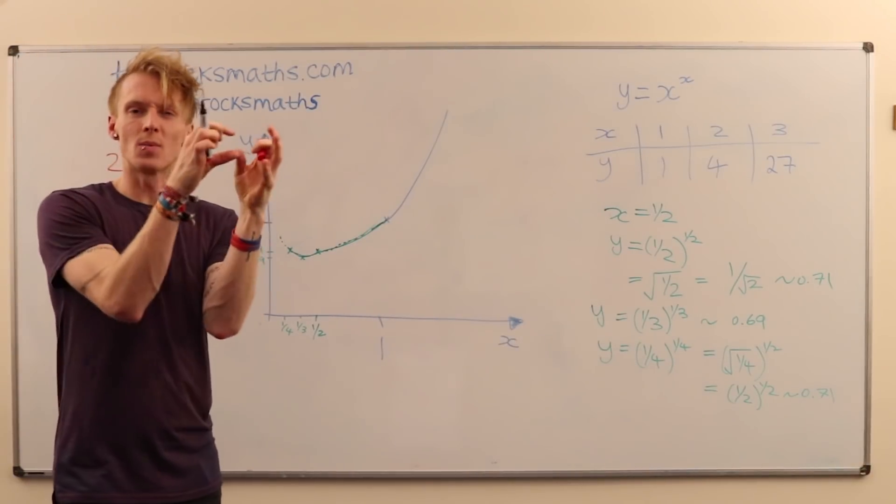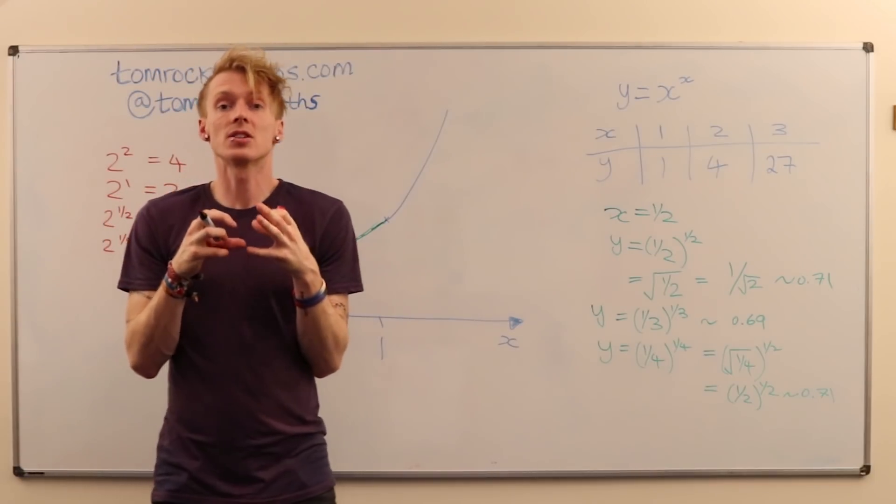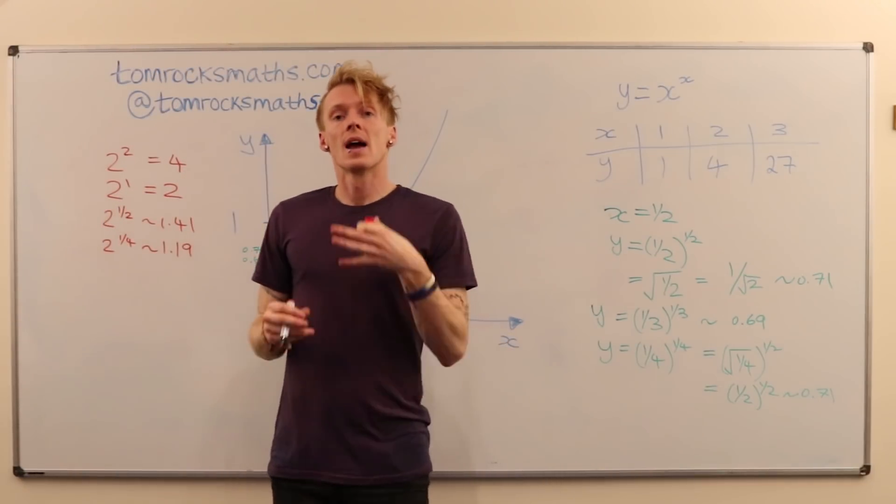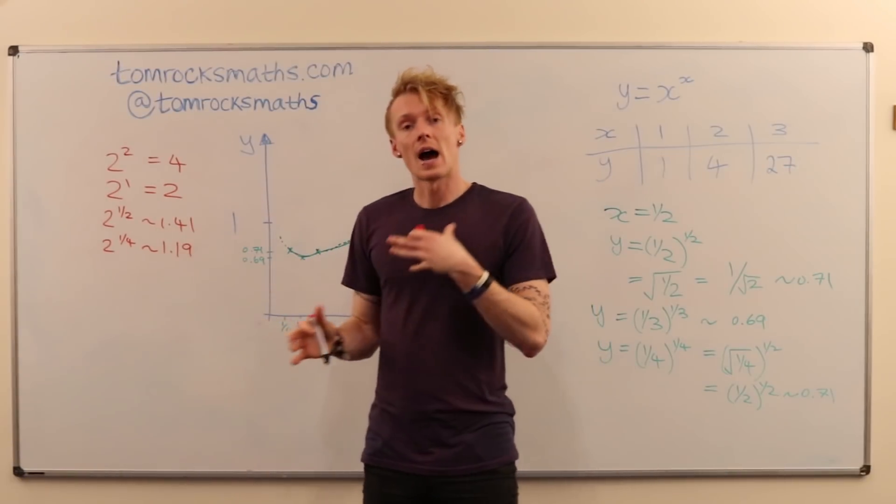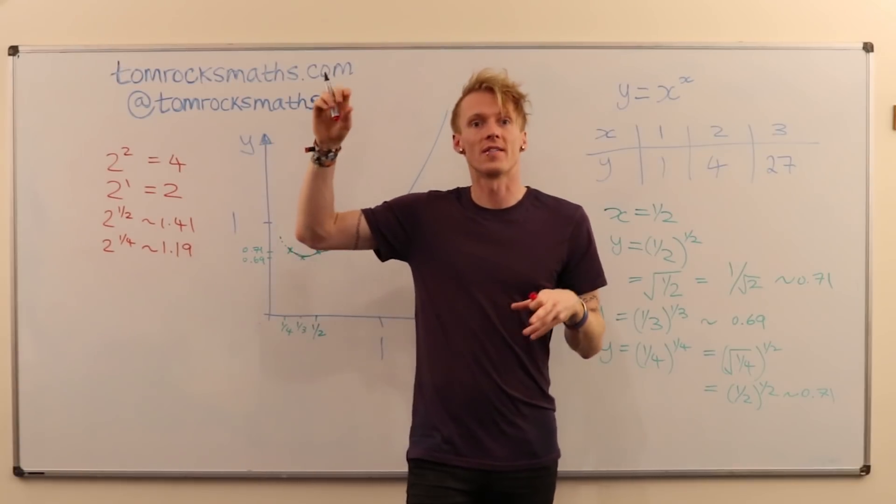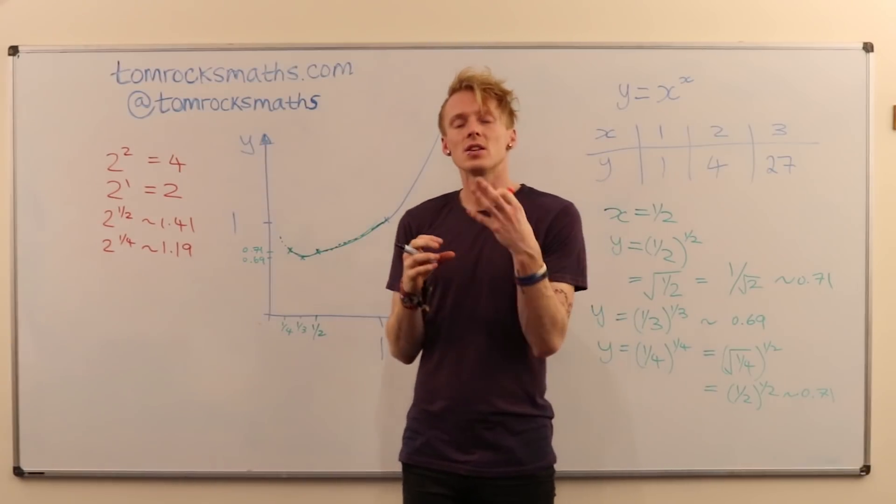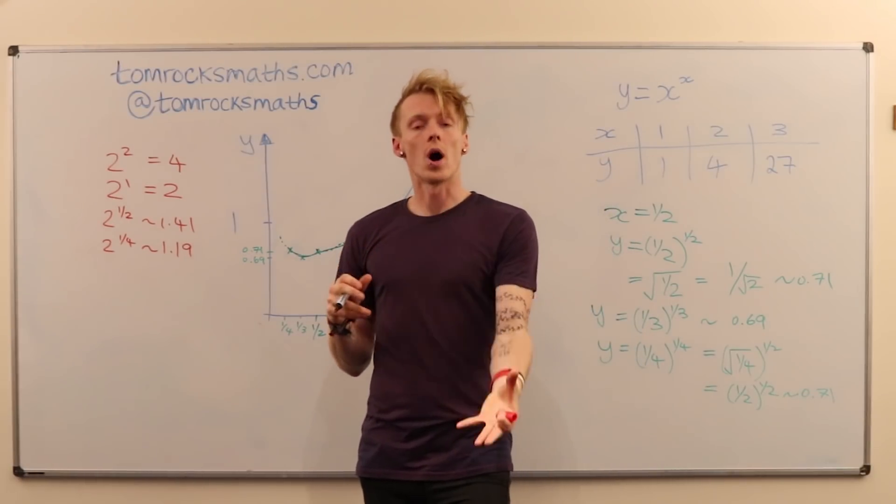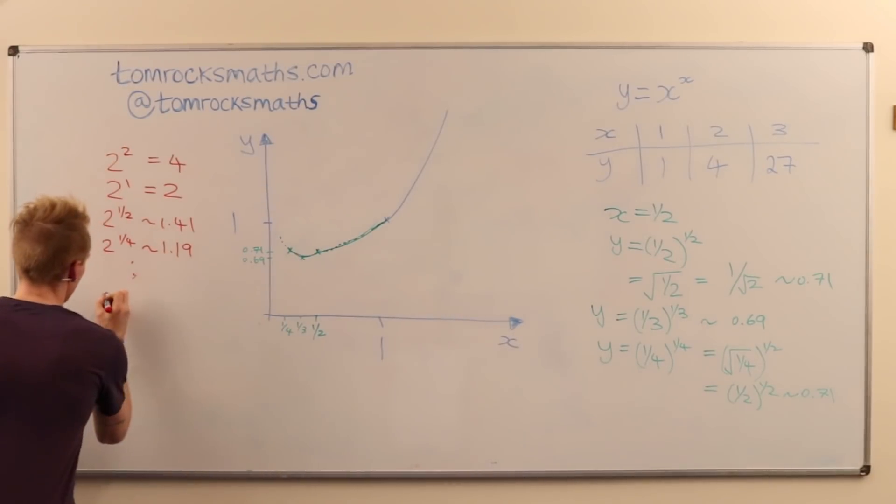What is happening as you take smaller and smaller powers of 2 is that the answer is tending towards a limit. And to be able to see what that limit is, you would need to continue this pattern. And you can try this on your calculator. Do 2 to the power of 1 divided by a thousand or 1 divided by a million and take 2 to that power. And you'll see that you get closer and closer to 1.